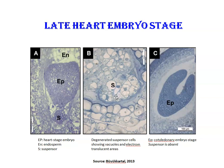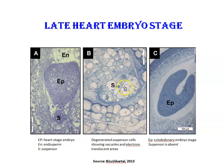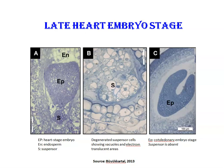Later, the suspensor degenerates at the late heart stage of embryogenesis and is not present in the mature embryo. Degenerating suspensor cells show vacuoles and electron-translucent areas. At the cotyledon embryo stage, the suspensor is absent.